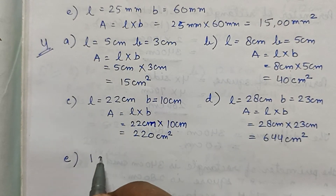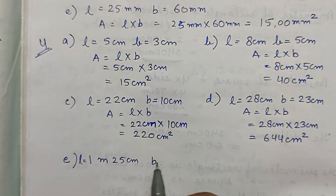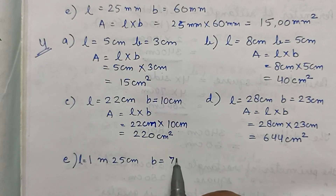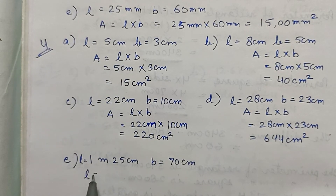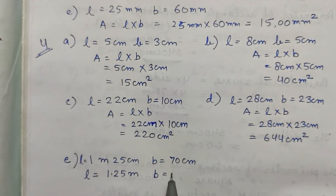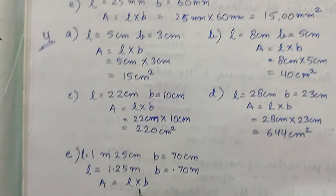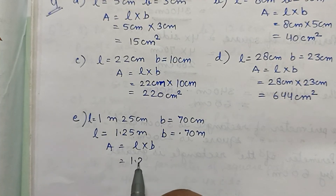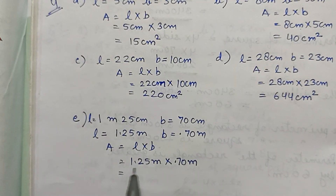Part e: length is 1 meter 25 centimeter, which is equal to 1.25 meter, and breadth is 70 centimeter, which is equal to 0.70 meter. Area is equal to L × B, so 1.25 meter × 0.70 meter. When we multiply them we get 0.875 meter square.